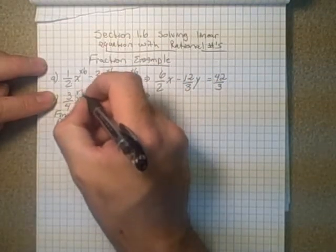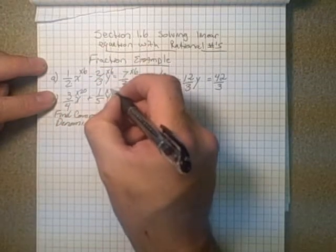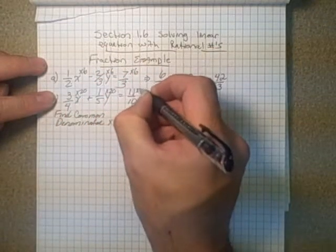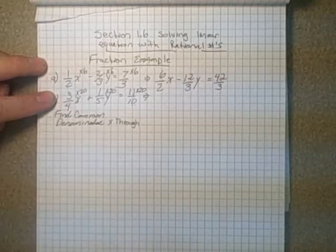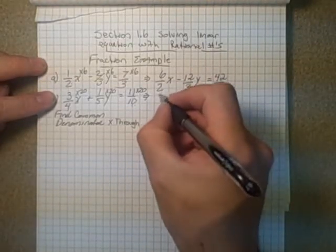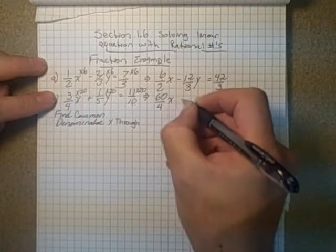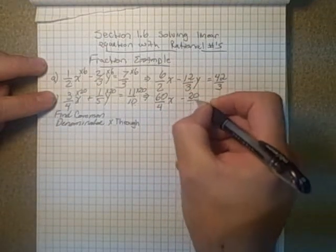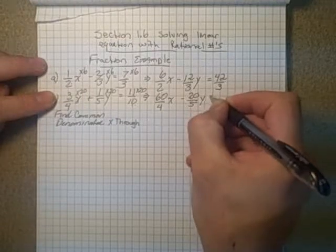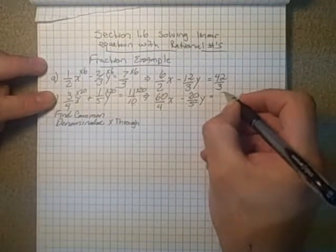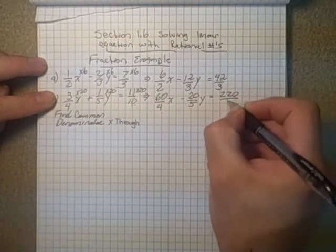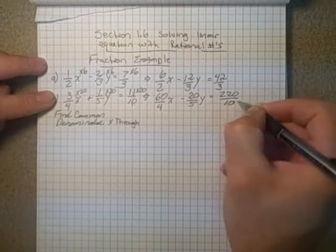So multiply everything here by 20. So that leads us into 3 times 20 which is 60 over 4x minus 20 over 5y equals, well, 11 times 20 is 220 over 10.